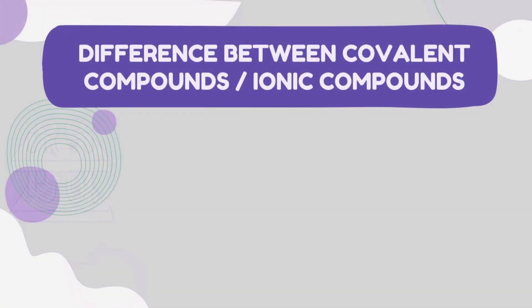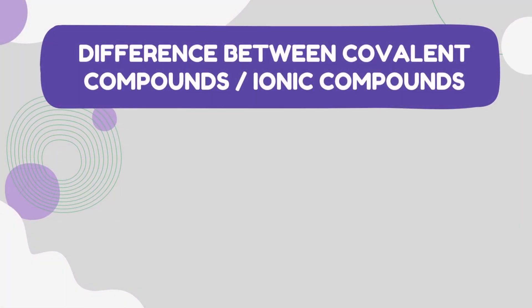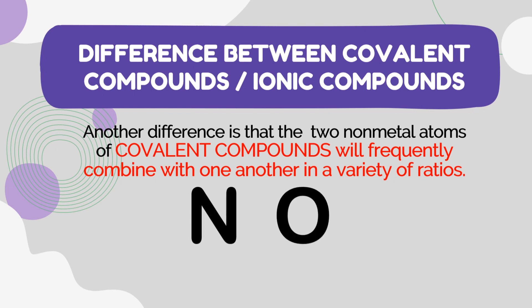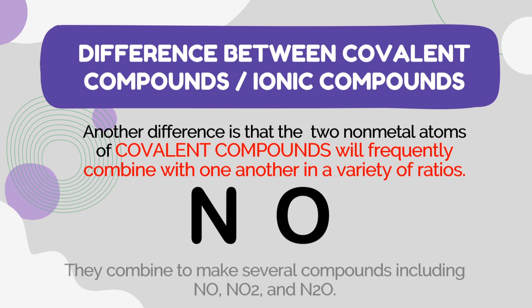The difference between ionic and covalent compounds is that the two nonmetal atoms of covalent compounds will frequently combine with one another in a variety of ratios. Consider the elements nitrogen and oxygen — they combine to make several compounds including NO, NO2, and N2O.